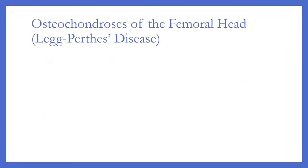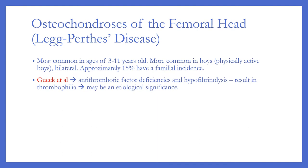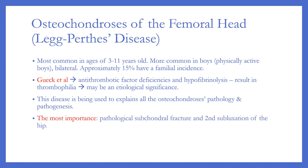Osteochondrosis of the femoral head is most common in ages 3 to 11 years, more common in boys — particularly physically active boys — with approximately 15% having a familial incidence. Antithrombotic factor deficiency and hypofibrinolysis resulting in thrombophilia may be of etiological significance. The most important pathological features are subchondral fracture and secondary subluxation of the hip.